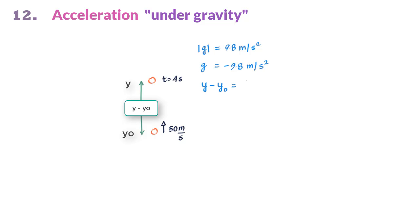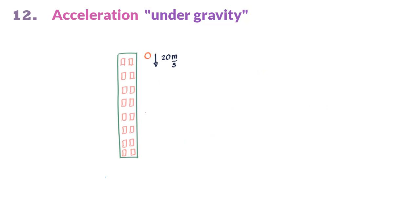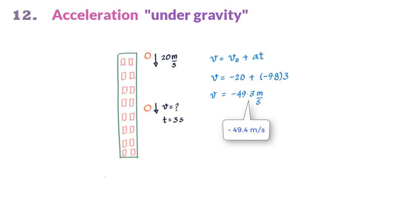If you throw a ball up with a velocity of 50 m/s and are asked to find displacement after 4 seconds, use y minus y_0 equals v_0 t plus ½at². With correct signs: y minus 0 equals (plus 50)(4) plus ½(minus 9.8)(4²), giving y equals plus 121 meters — positive, since the ball is indeed above the starting point. If a ball is thrown downward at minus 20 m/s from a tower, its velocity after 3 seconds is v equals minus 20 plus (minus 9.8)(3) equals minus 49.4 m/s, negative since the velocity vector points in the minus y direction.